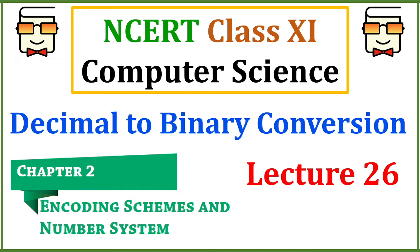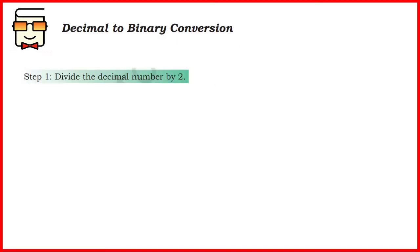In this video, we will be studying how to convert a decimal number to a binary number. To convert any decimal number into a binary number, there are 4 to 5 major steps that you have to perform. The first step is that given any decimal number, you have to first divide it by 2. We are talking about binary conversion, that is why we are dividing by 2. If you have to convert into hexadecimal, you will be dividing by 16. If you have to convert into octal numbers, you will be dividing by 8. Depending upon the base or radix into which you have to convert the decimal number, you will be performing the division. Since we are doing decimal to binary conversion, we will take the input number and divide it by 2.